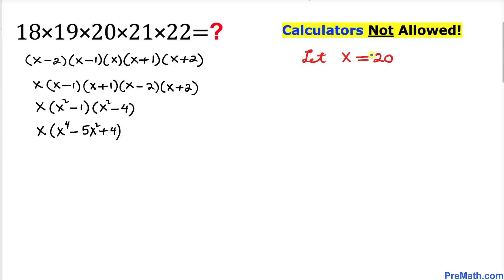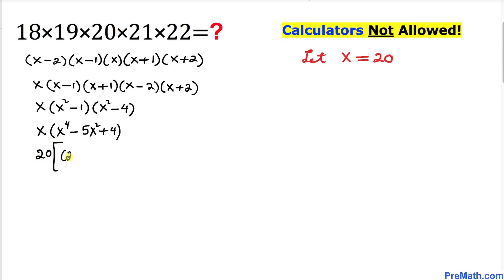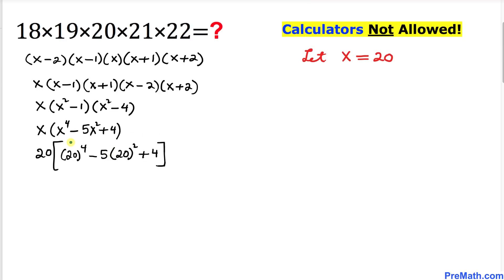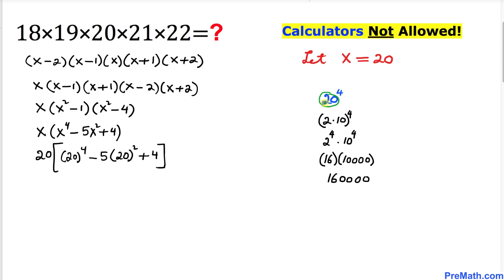Now we know that our x value is 20, so wherever we see x I am going to replace it with 20. Therefore I can write this as 20 times (20 to the power 4, minus 5 times 20 squared, plus 4). Now let's simplify this. Let's focus on 20 to the power 4.